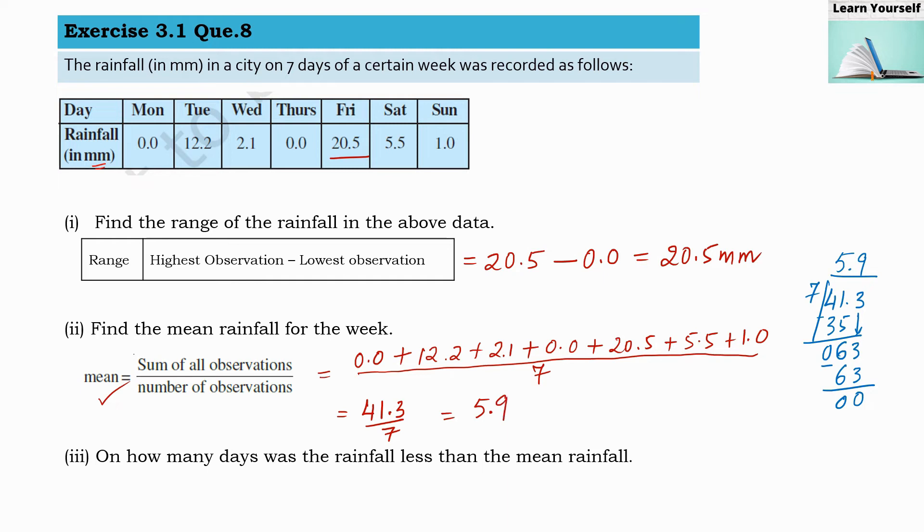Third question is on how many days was the rainfall less than the mean rainfall? Our mean is 5.9 millimeters, so how many days was the rainfall lesser than this?